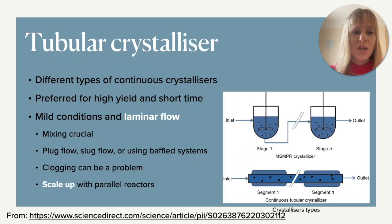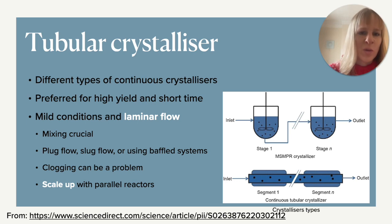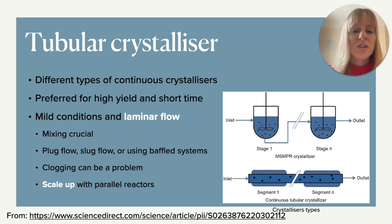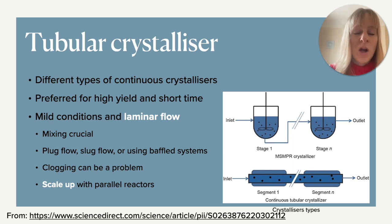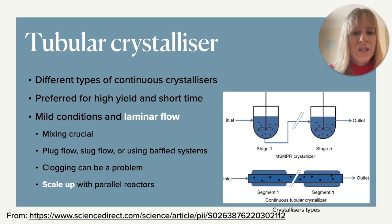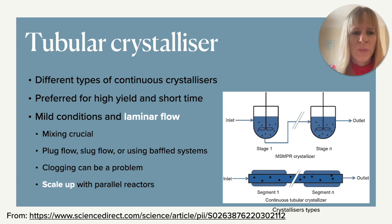Now that we've looked at the conditions needed for crystallization, let's look at two types of reactors commonly used in continuous crystallization. The most common one is the tubular crystallizer. Looking at the image, the bottom one is a tubular crystallizer — essentially a tube-based system. This is preferred when you have a high yield and particularly for a short residence time. These crystallizers can be operated under relatively mild conditions and typically run in laminar flow — nothing too vigorous, as that might disturb crystallization. Mixing is very important because clogging can easily occur, especially when bigger crystals form within the tubes.